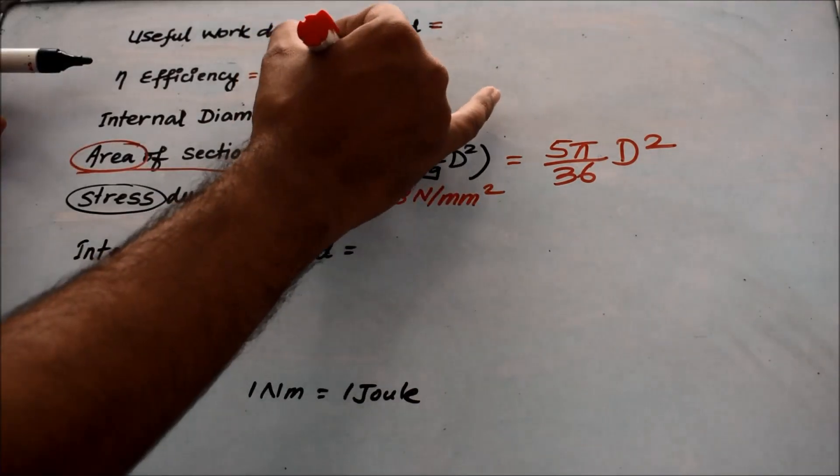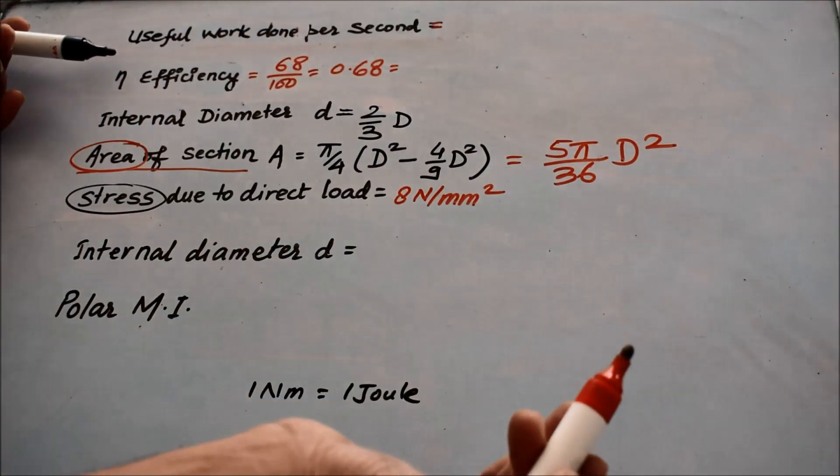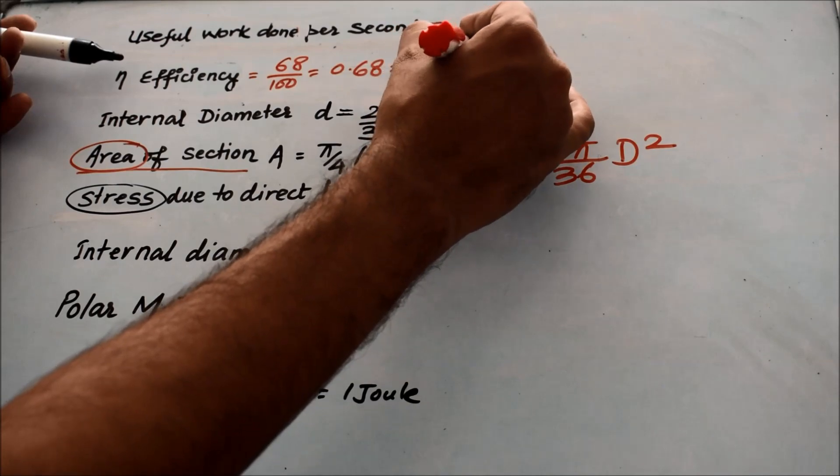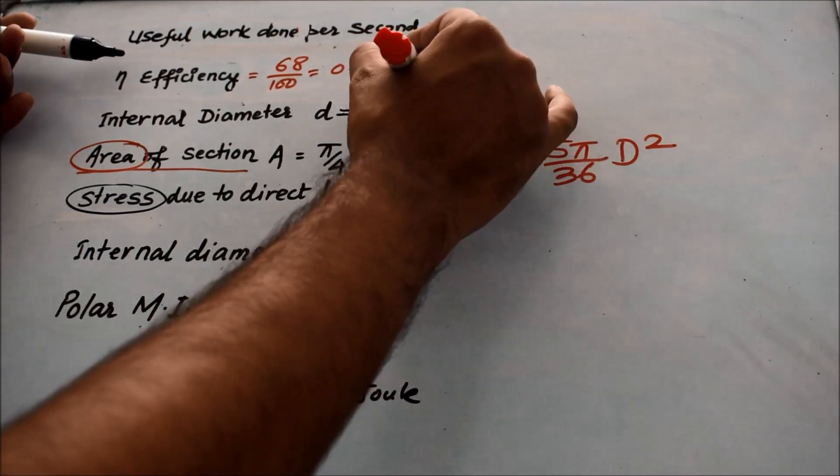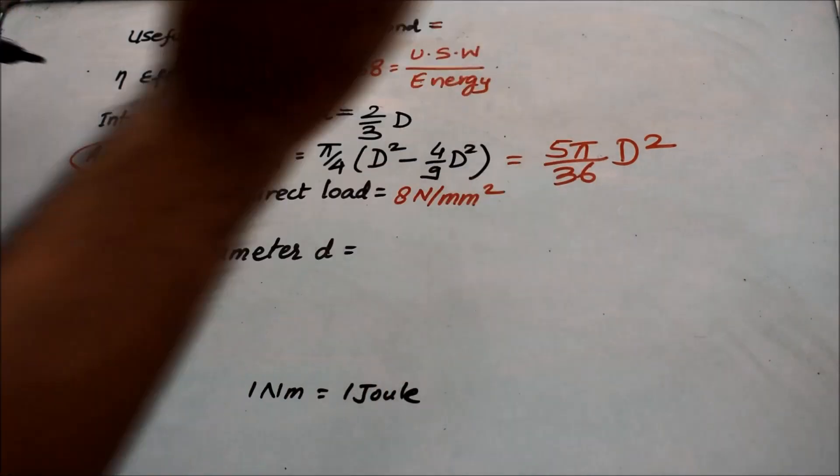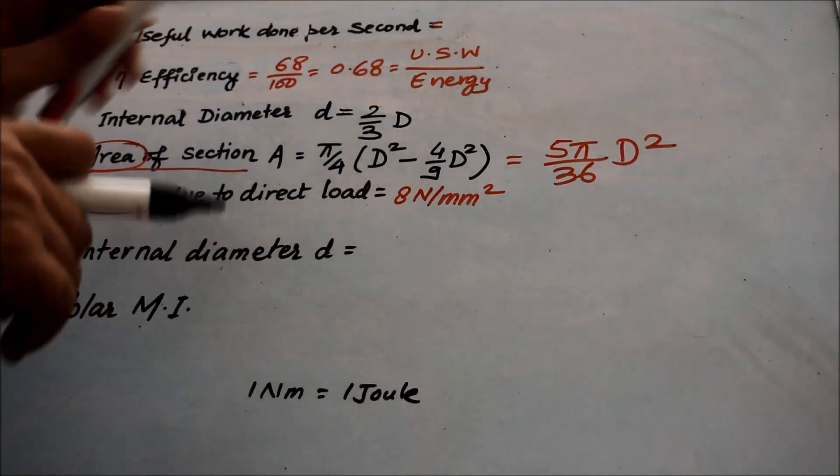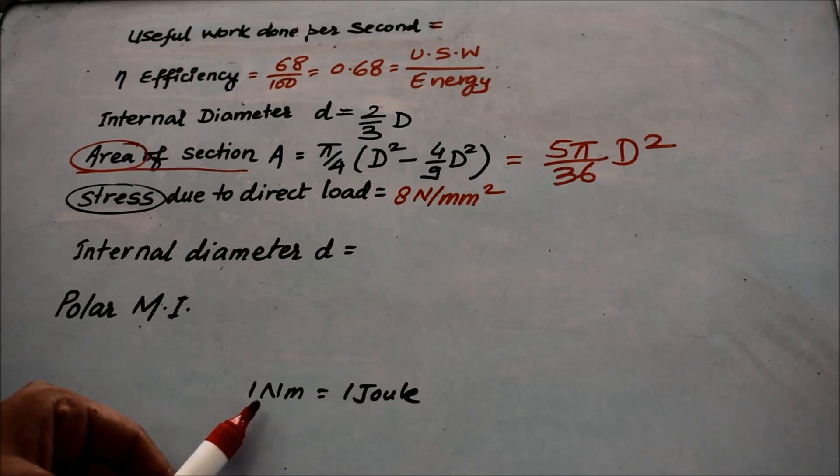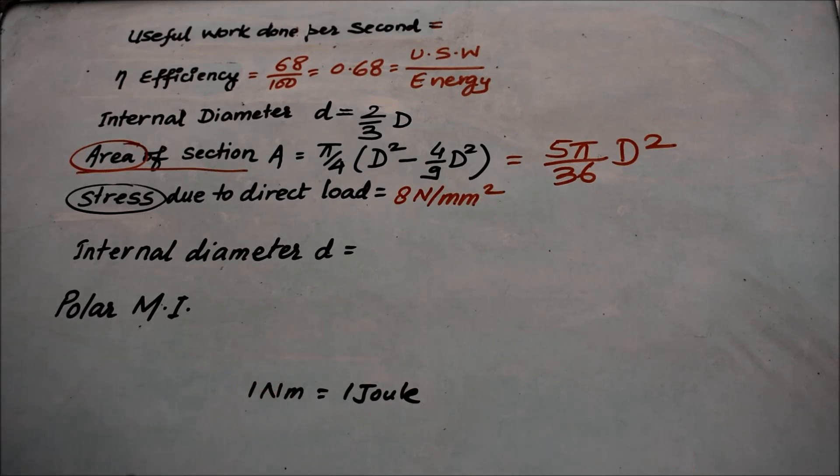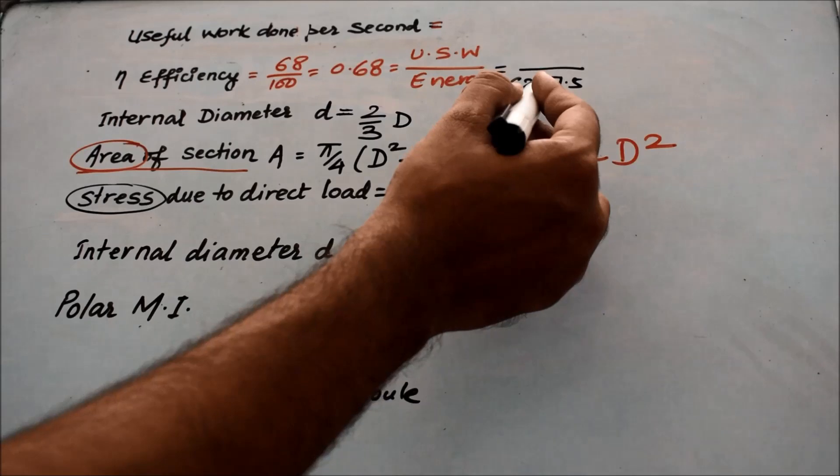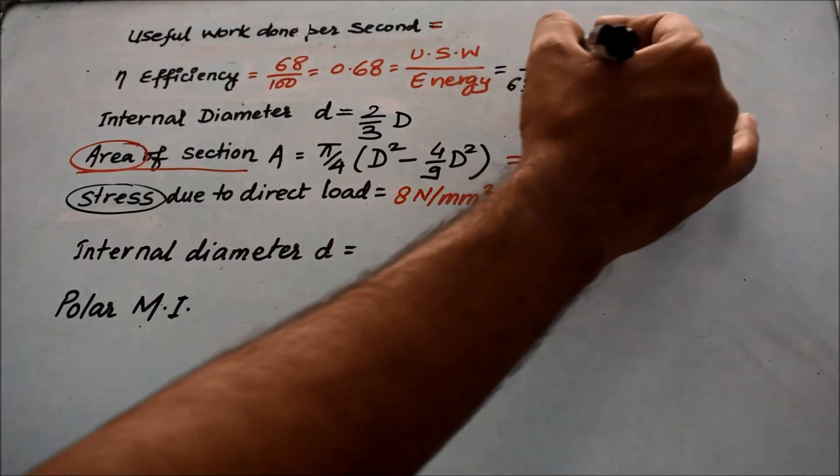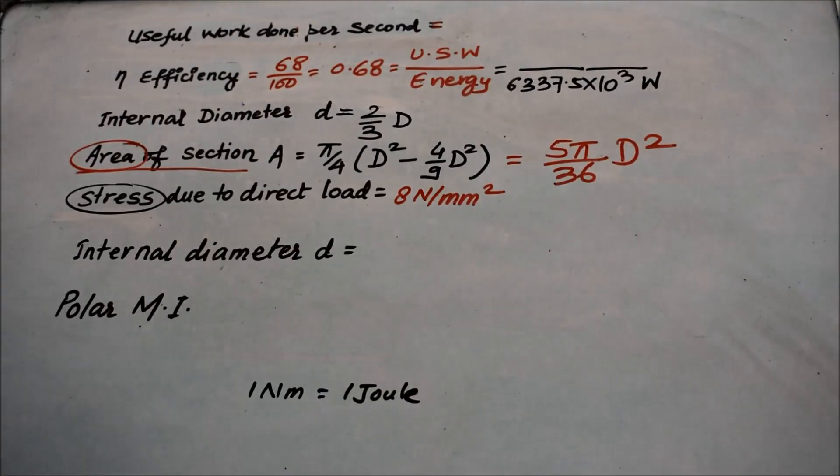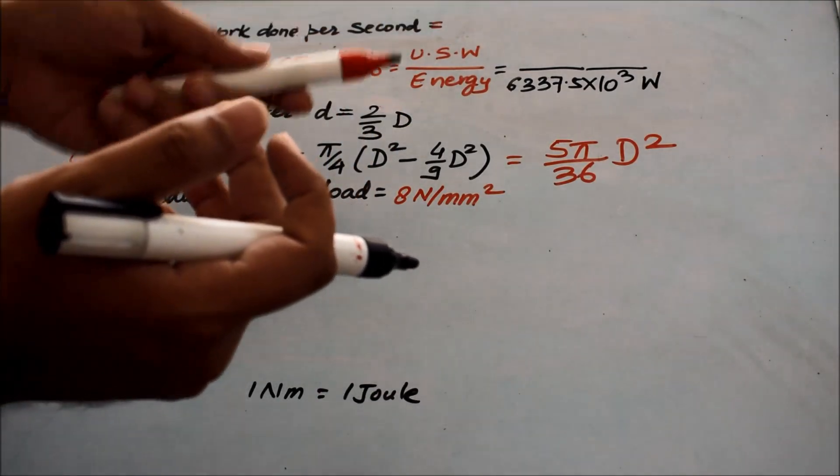You have to use the value of efficiency they have given as 68 percent, so you can write it as 68 by 100, that is 0.68. We know that efficiency is output upon input. In case of any shaft, there is certain useful work that is done divided by the energy that is given in input. Energy will have unit joule, and work done has unit Newton meter. They have directly mentioned that on the expenditure of this much energy, 6337.5 kilowatt, they are getting certain amount of work done.